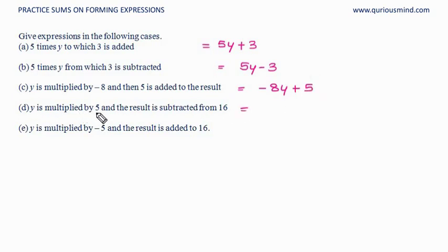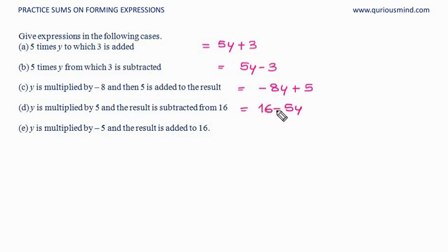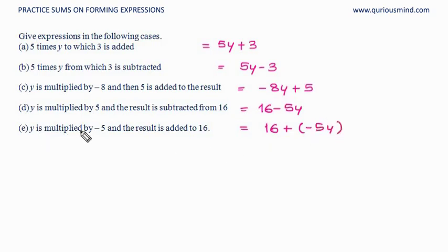y multiplied by 5 gives 5y, and this result is subtracted from 16, so it is 16 − 5y. y is multiplied by −5 and the result is added to 16: y × −5 gives −5y, and adding to 16 gives 16 + (−5y), which simplifies to 16 − 5y.